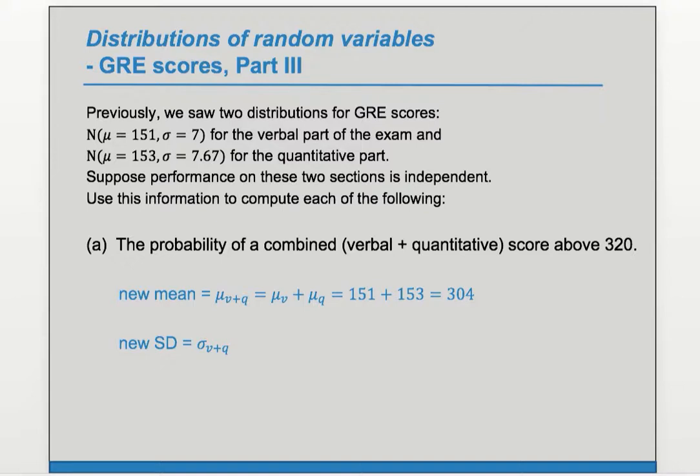For the new SD we can't simply add the two standard deviations because the variation doesn't simply add like that. So we have to recall our Pythagorean theorem. The first one squared plus the second one squared equals the third one squared. So that means σ_v+q equals the square root of the first one squared plus the second one squared. And so if we evaluate that, that's the square root of 7 squared plus 7.67 squared and that'll give us 10.4.